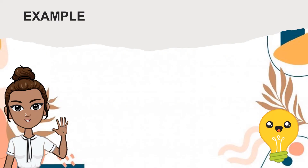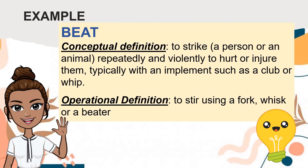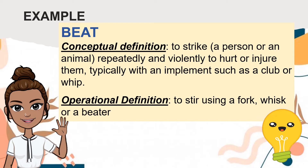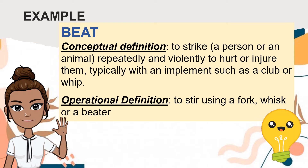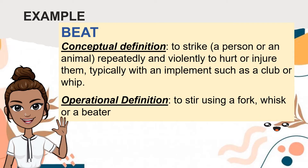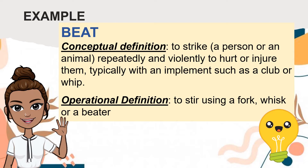Here are examples of the definition of terms. For 'beat': the conceptual definition is to strike a person or an animal repeatedly and violently to hurt or injure them, typically with an implement such as a club or whip. For the operational definition, it means to steer using a fork, whisk, or a beater.